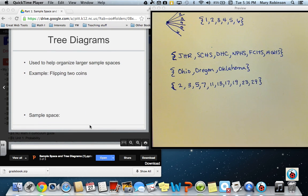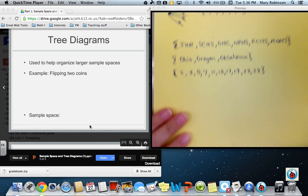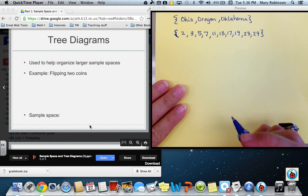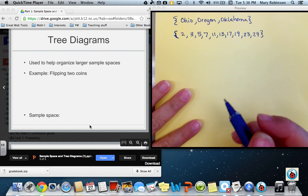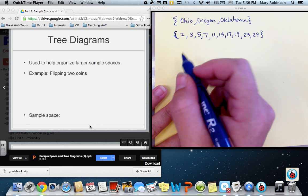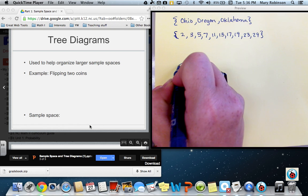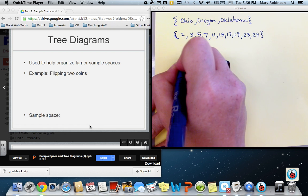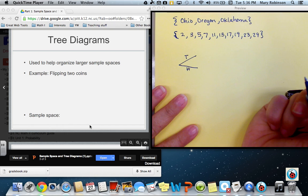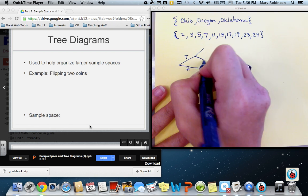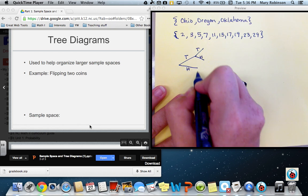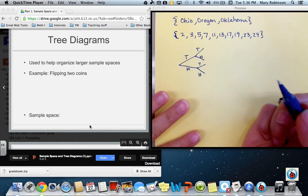Tree diagrams are used to help organize larger sample spaces. Particularly if there are two events, it makes it much easier to organize the information. For example, if we flip two coins, the first time we flip a coin, there are two possible outcomes, tails or heads. But then the second time, we could also get tails or heads.